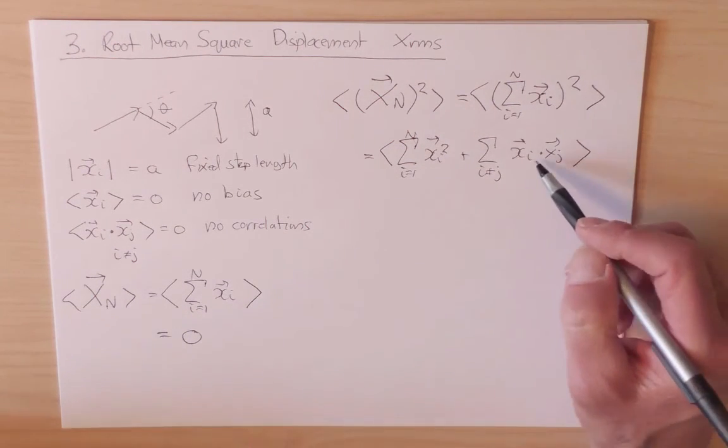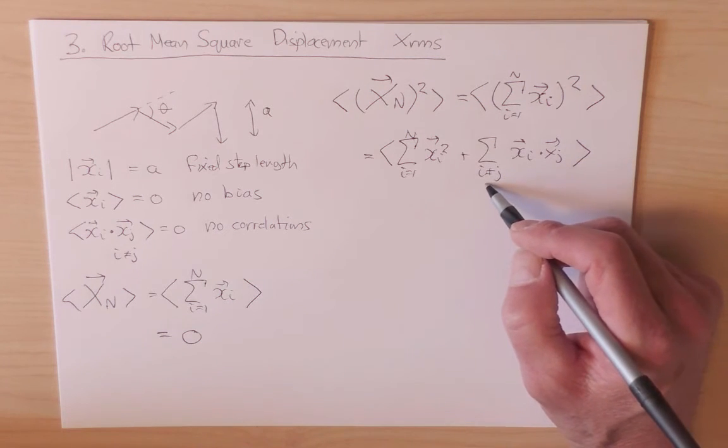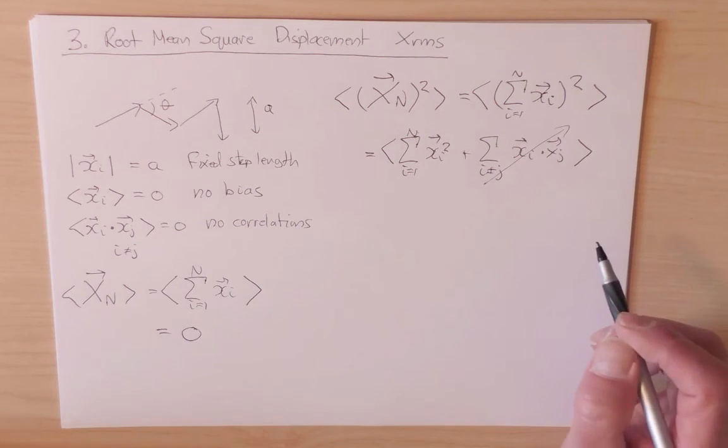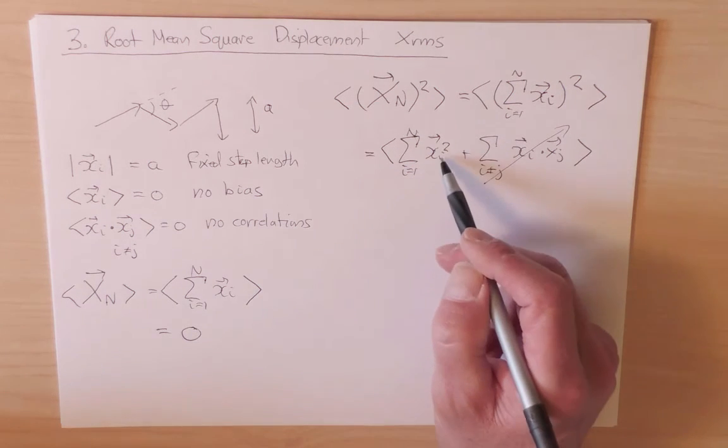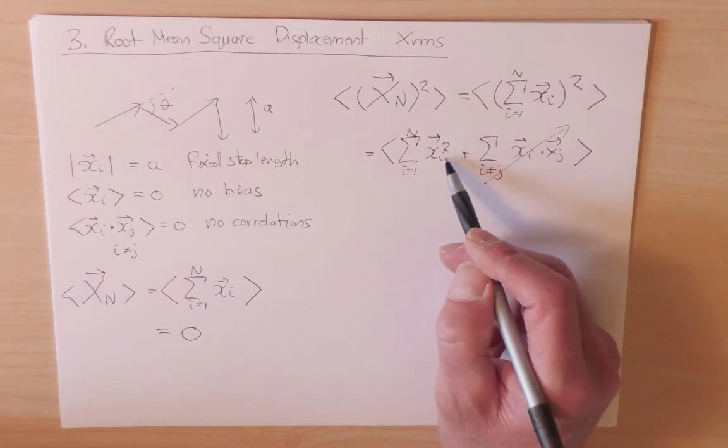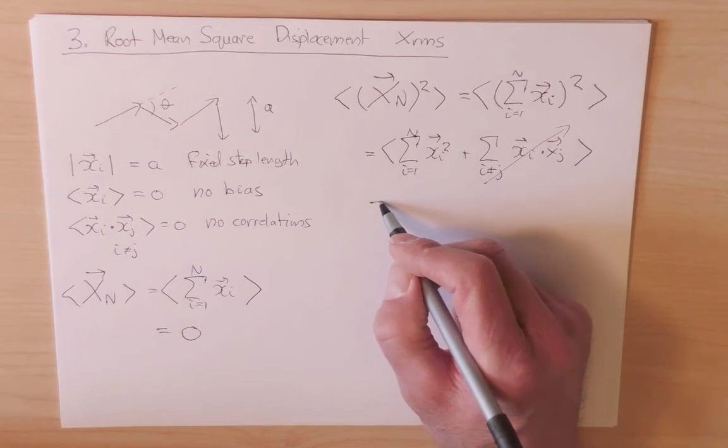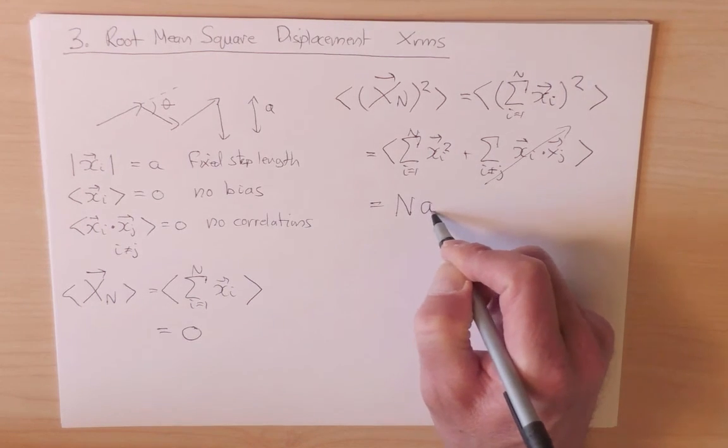So by construction, these cross terms are all zero, because there was no correlations between successive steps, so we just forget about this. The diagonal terms, they're all identical, they're the squared length of each individual step. There's n such terms, and so this is nothing more than n a squared.